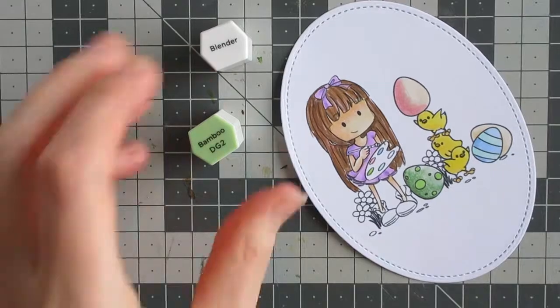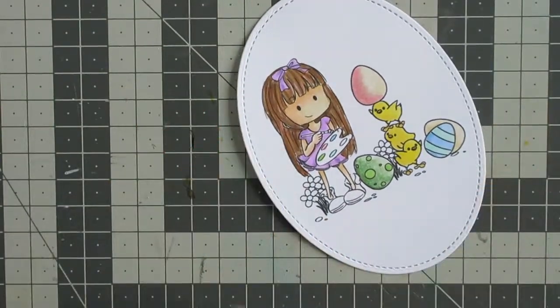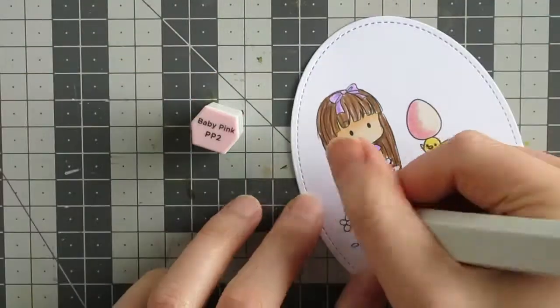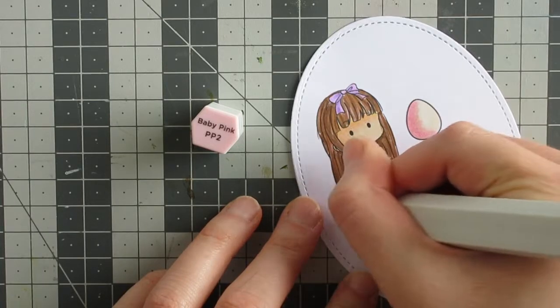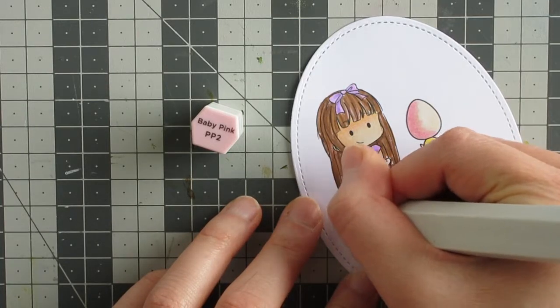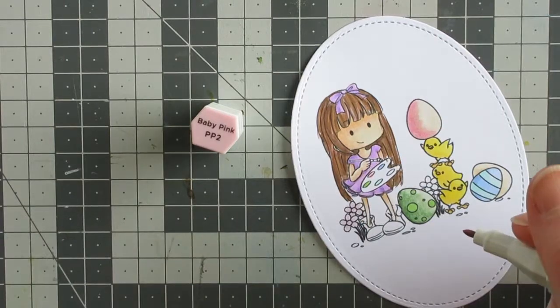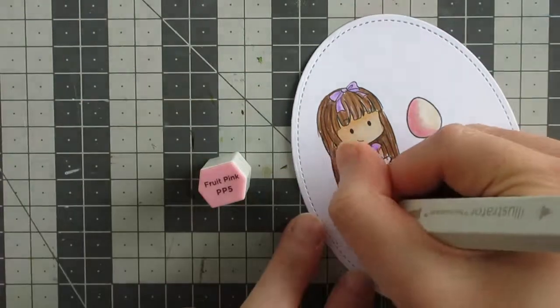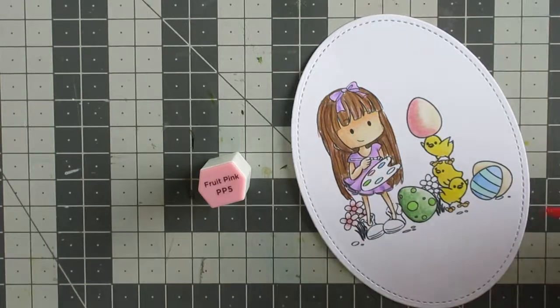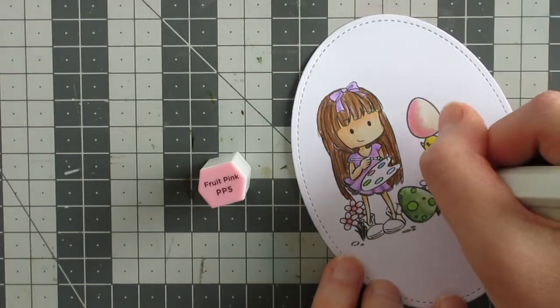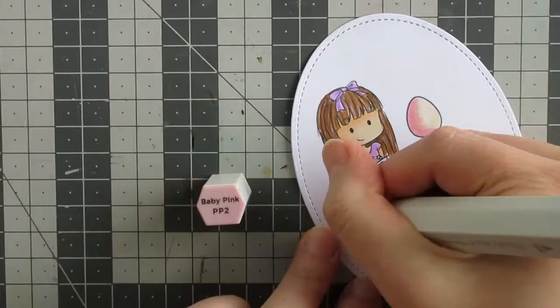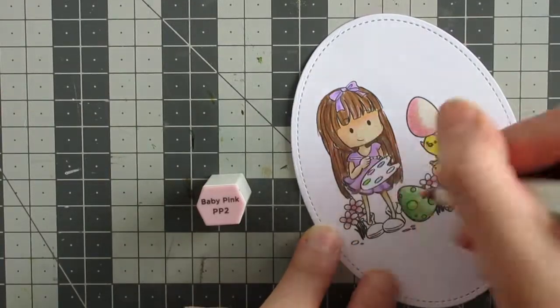I brought in the same pinks that I had used on the partially colored egg to color the flowers. I used a very pale pink first and then I'm going in with a darker pink for my shadow areas, for the centers of the flowers and the inner parts of petals.